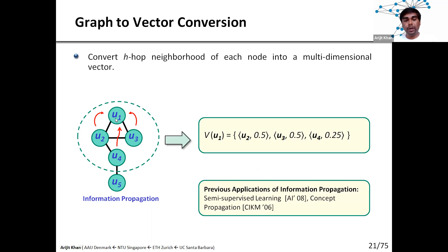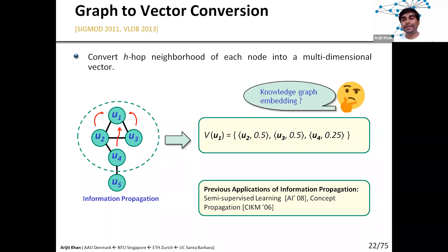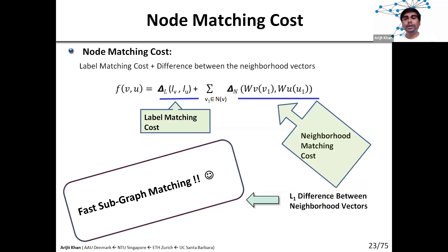Here we see the two-hop neighborhood of node u1, and we find other nodes like u2, u3, and u4. To preserve closeness, one idea is to consider the shortest path distance and create a vector embedding based on that. For example, u2 and u3 have a higher score because they are closer to u1, and u4 has a slightly lower score. You can also use more sophisticated ideas like random walk-based embedding. In fact, this work was really the predecessor of all the knowledge graph embedding techniques popular today, as they also do neighborhood embedding but in a more sophisticated way.